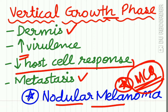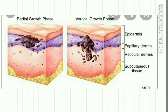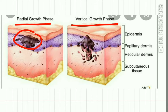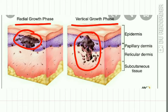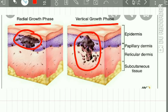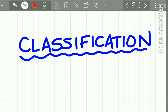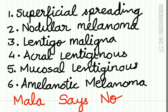Nodular melanoma is a kind of melanoma with only the vertical growth phase. In the radial growth phase, neoplastic cells are present only in the epidermis, while in the vertical growth phase these cells have crossed the basement membrane and entered the underlying dermis. Now the classification of malignant melanoma — there are six types.